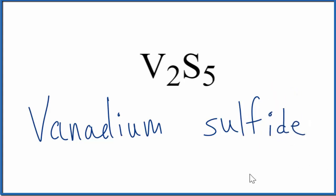So far, we have vanadium sulfide as the name for V2S5. But because vanadium is a transition metal, we need to take into account its oxidation number here.